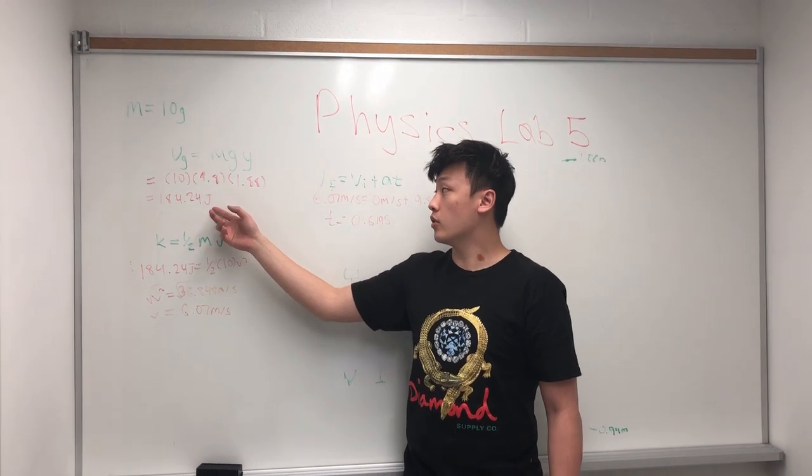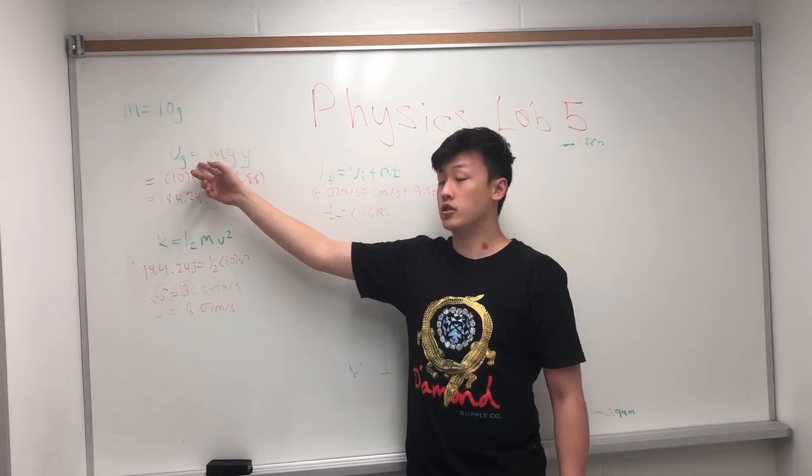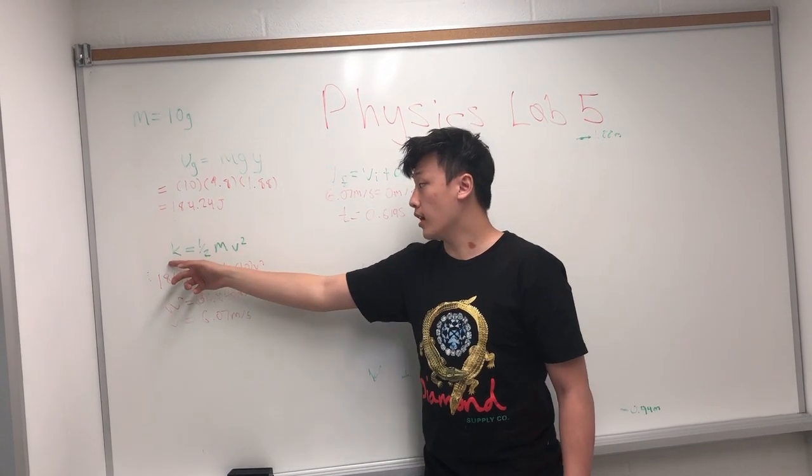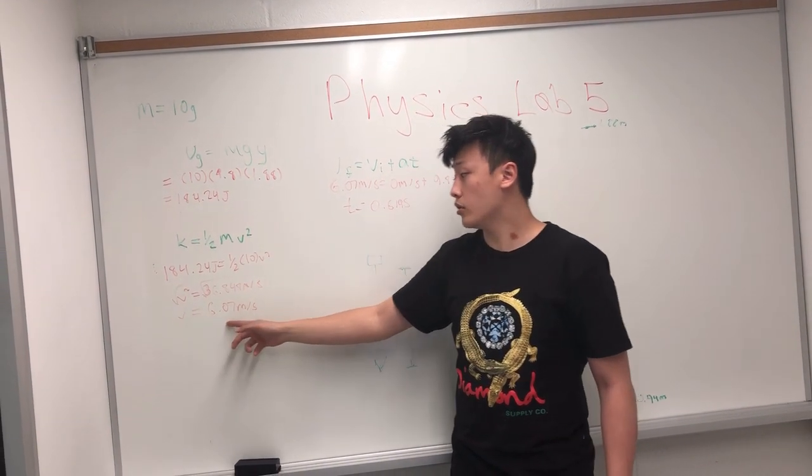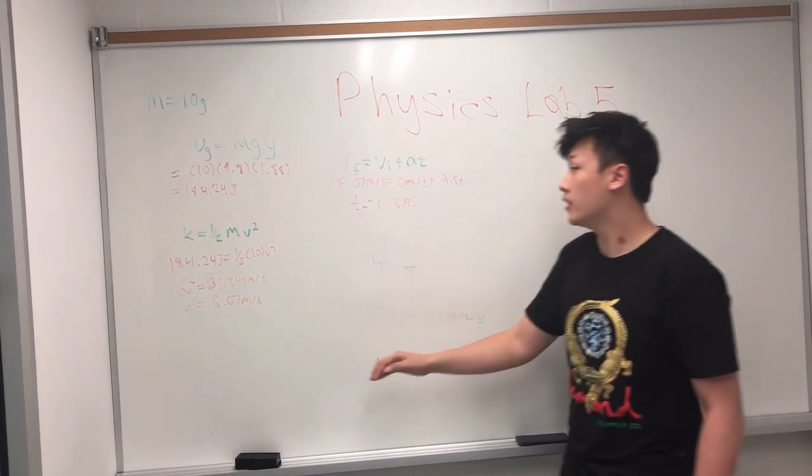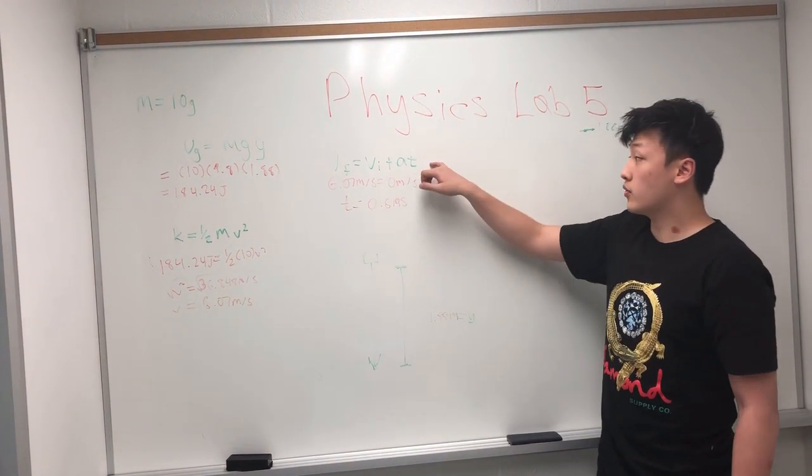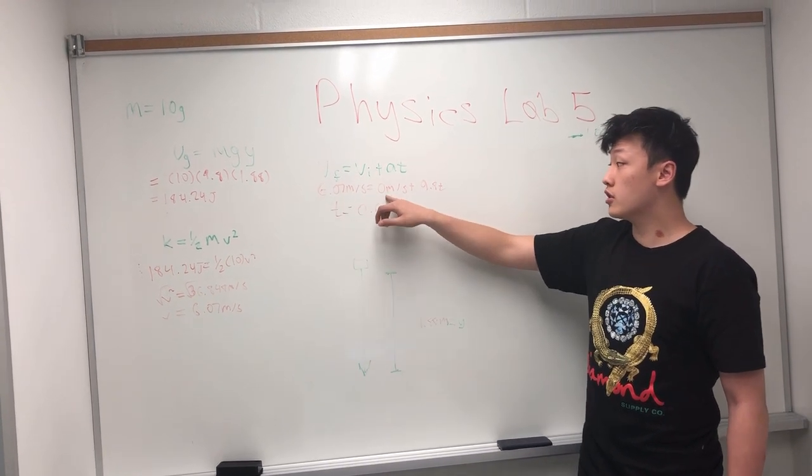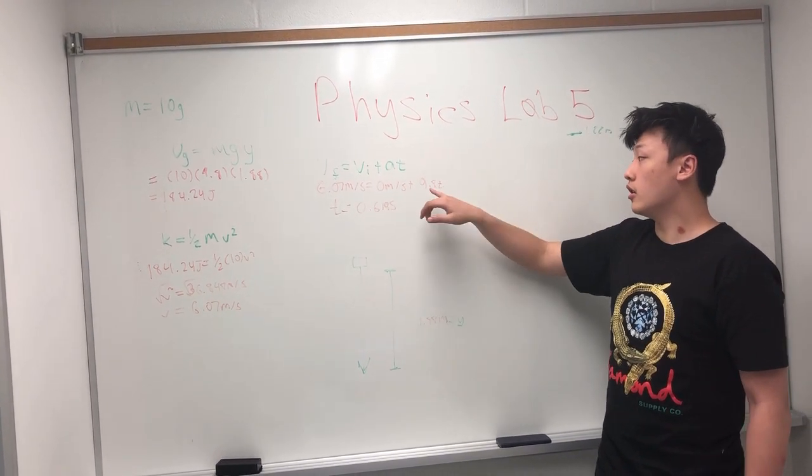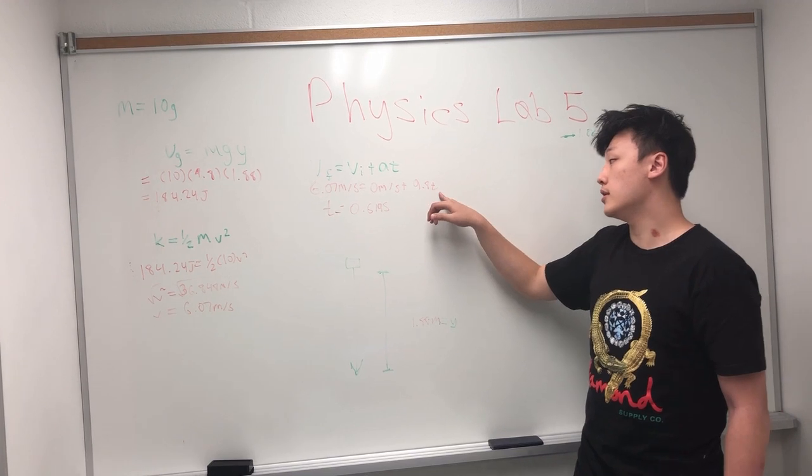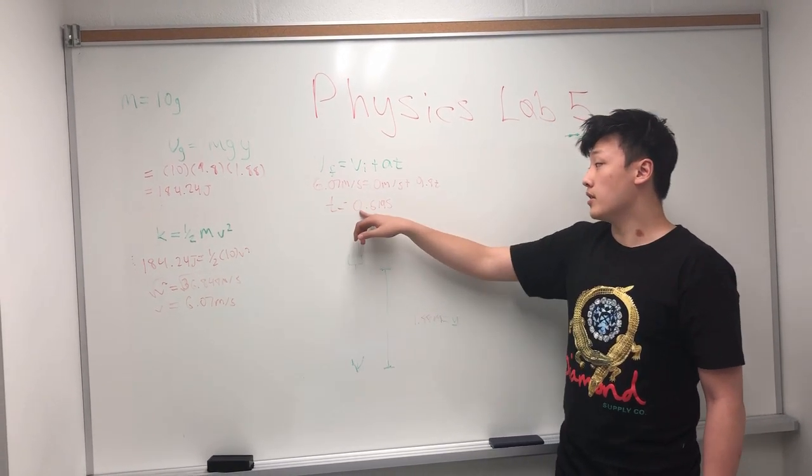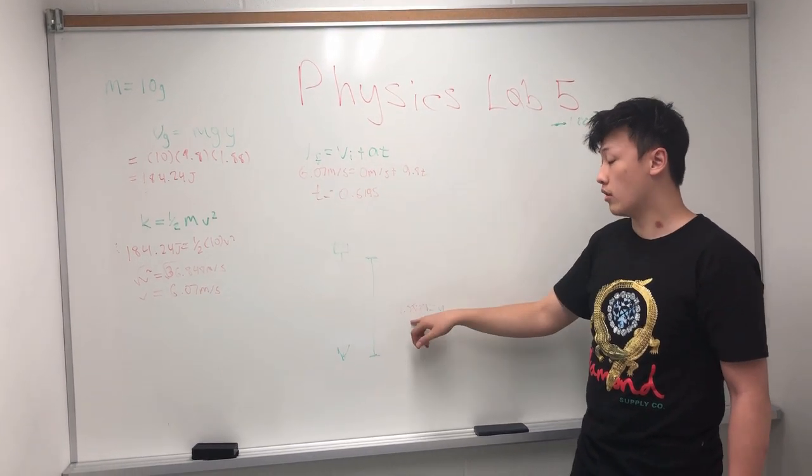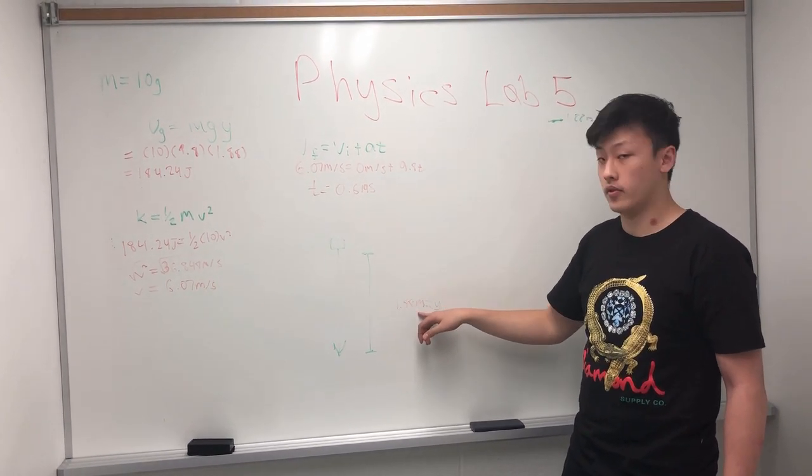Now since it fell, all this potential energy turns into kinetic energy, which means we can plug this value into K and determine the final velocity, which is 6.07 meters per second. Then you plug this into a kinematics formula. Final velocity is 6.07 meters per second, initial velocity is 0, and acceleration is 9.8. The time ends up being 0.619 seconds when dropped from 1.88 meters.